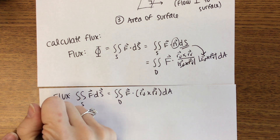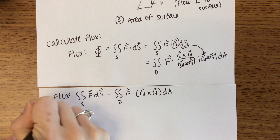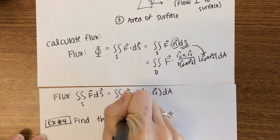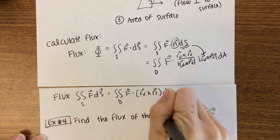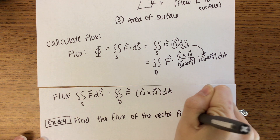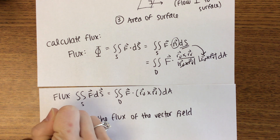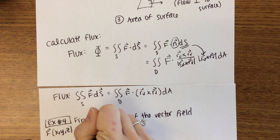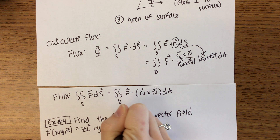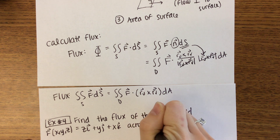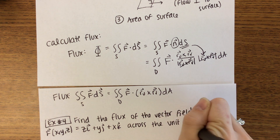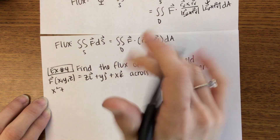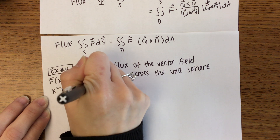Let's do an example. We are going to find the flux of the vector field F(x, y, z) = zi + yj + xk across the unit sphere, where the unit sphere is x² + y² + z² = 1.